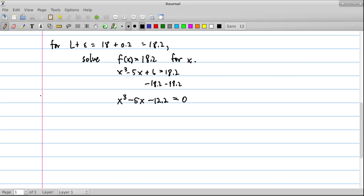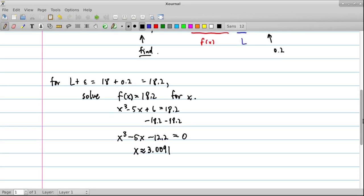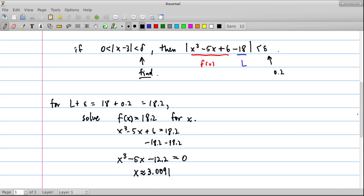So we go back to our work here, and we say, okay, that means that x is approximately 3.0091. Well, remember what we're going to do with that x. So this x right here is going to go into this formula right here to determine our delta. Now, that's the job.